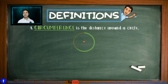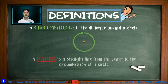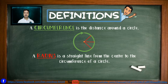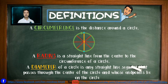A circumference is the distance around the circle. Just like in polygons we have a perimeter, in a circle we call it a circumference. A radius is any straight line segment connecting the center to any point on the circumference. A diameter of a circle is any straight line segment that passes through the center and whose endpoints lie on the circle.